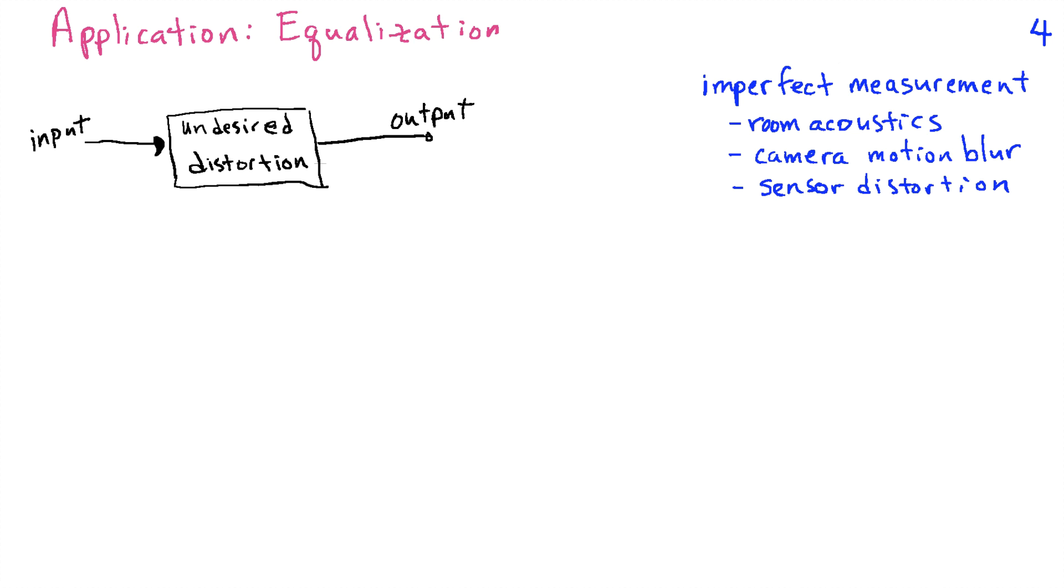So the third example that I want to consider in this lecture is that of equalization. Now in equalization, we have a signal of interest that's going through some sort of distortion. Perhaps it's due to an imperfect sensor. It could be something like camera motion blur, room acoustics, and so on. And then we have an output signal. And our goal is to take the output signal and recover the input signal.